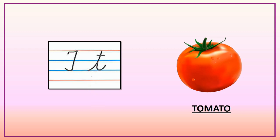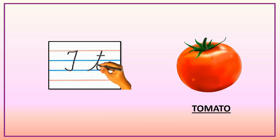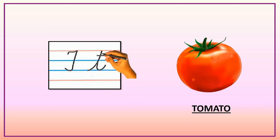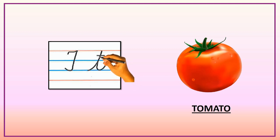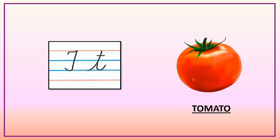Small letter T. Start from second blue line. Slant line up to first red line. Come down standing to second blue line. Turn right, curve and out. Put a sleeping line between first red line and first blue line. T — Tomato.